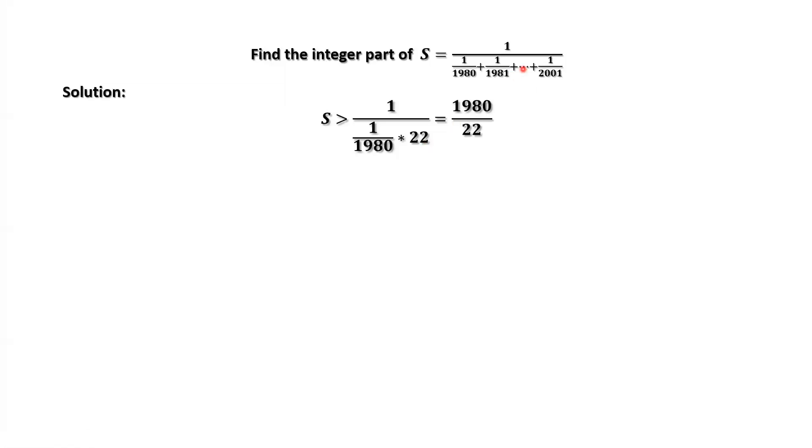This means, from the denominator, we replace all the remaining terms, except the first one, by 1 over 1980.